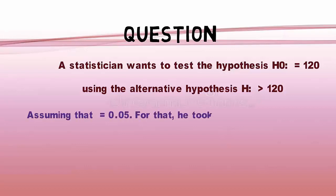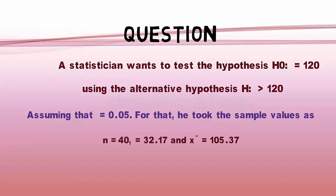Assuming that alpha equals 0.05. For that, he took the sample values as N equals 40.